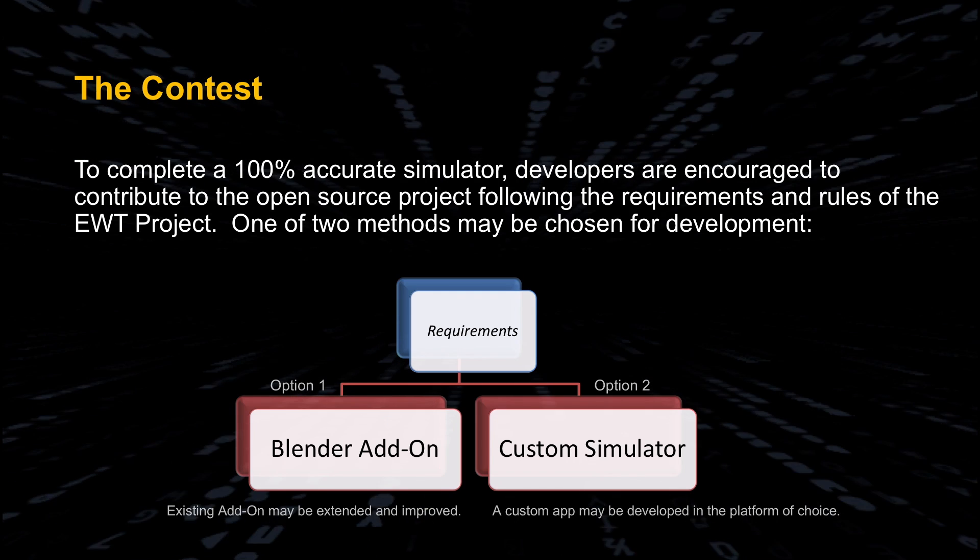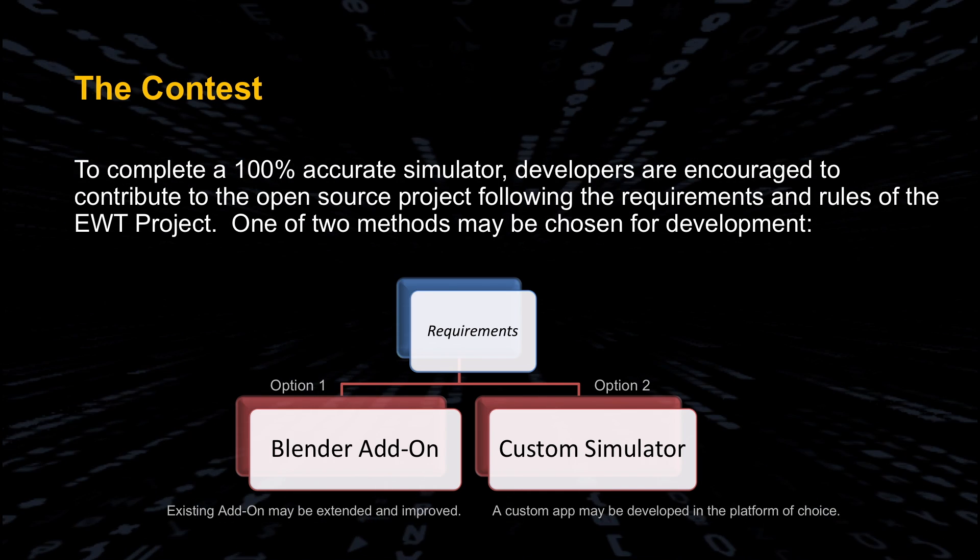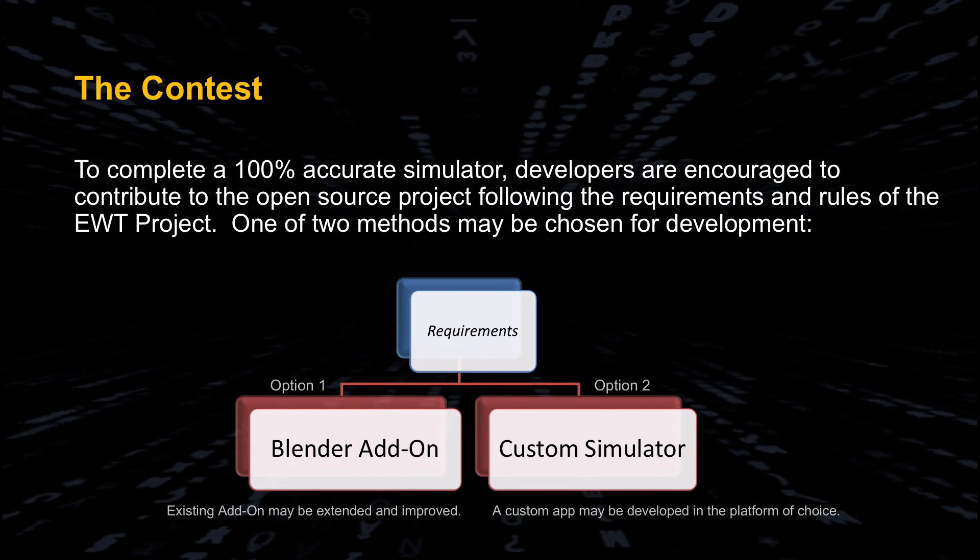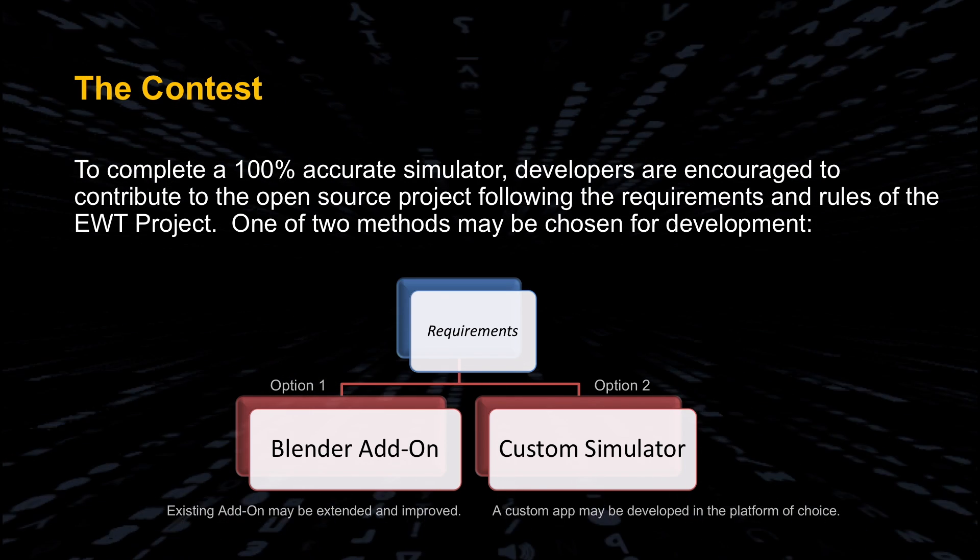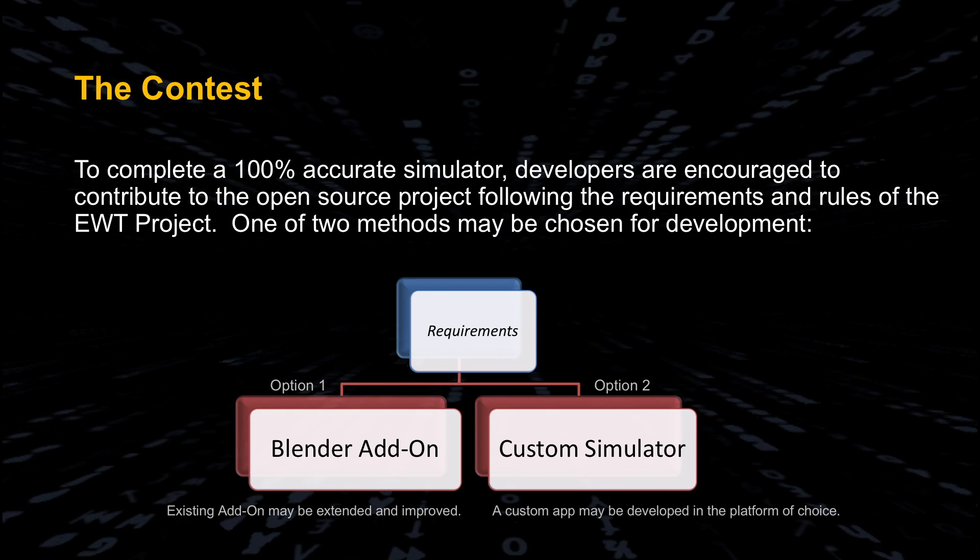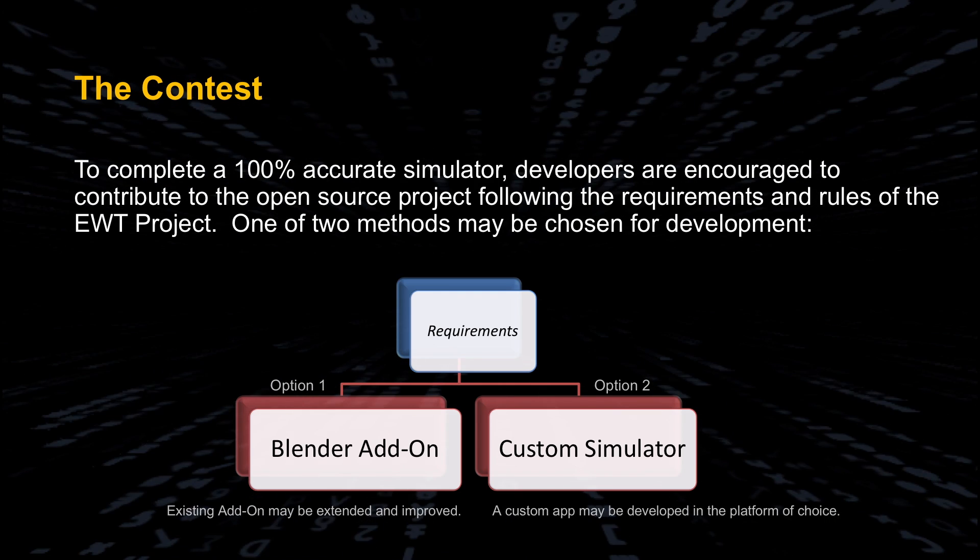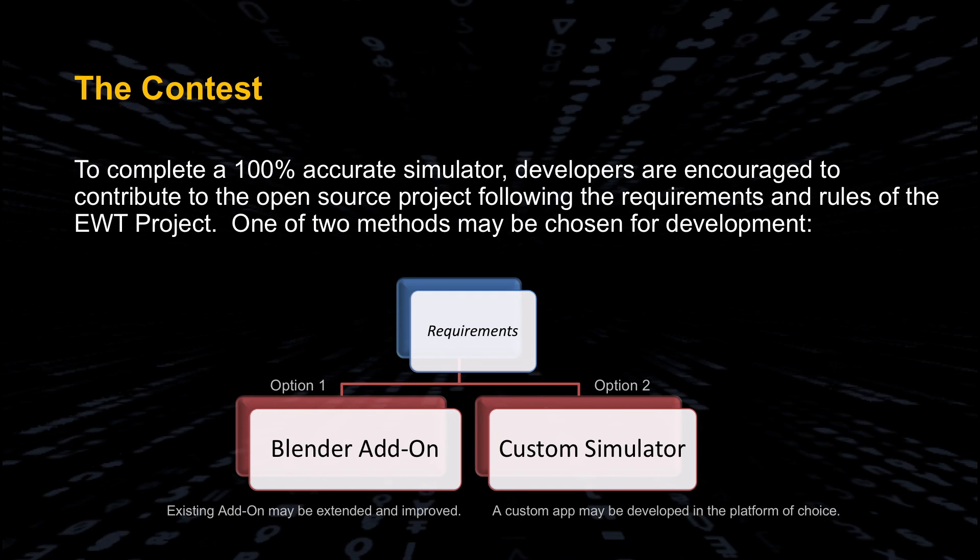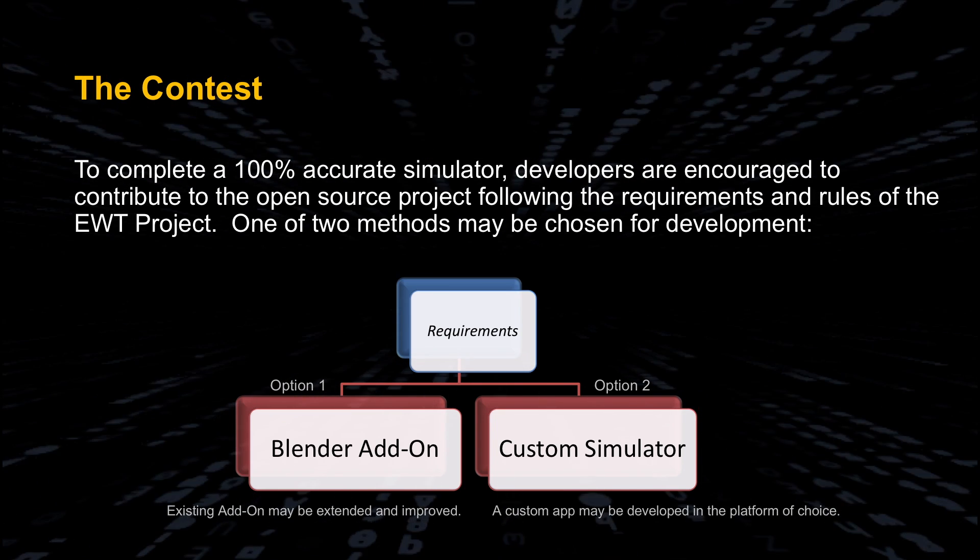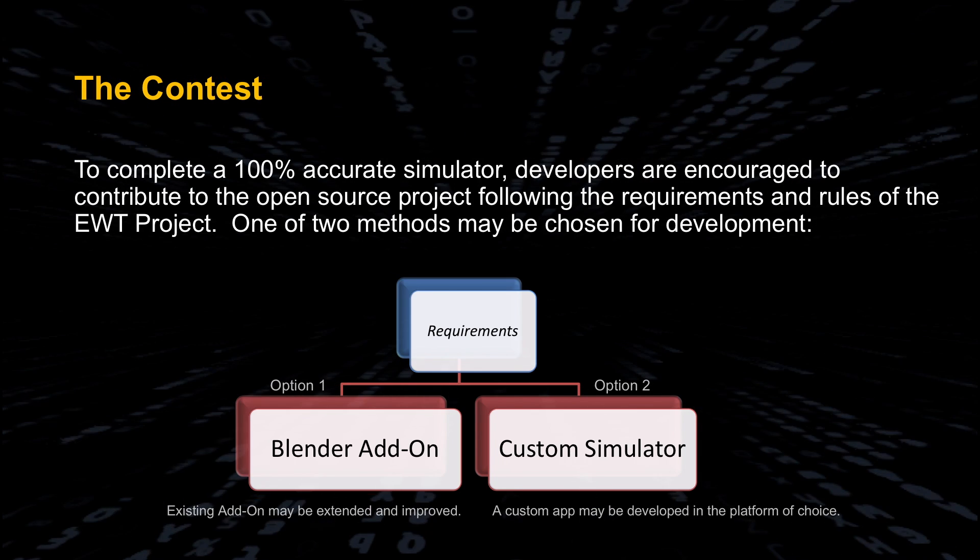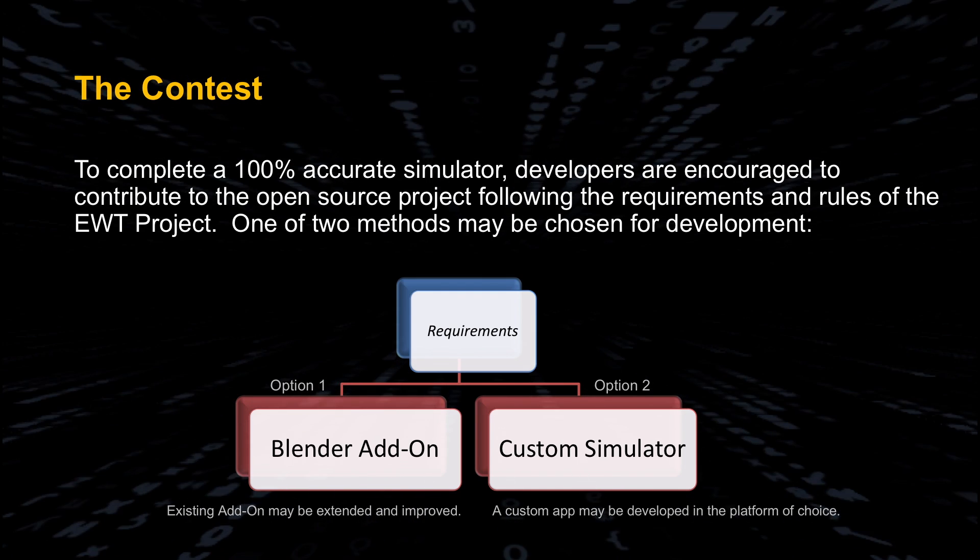And that brings us to the contest. To complete a 100% accurate simulator. Now it may be possible to extend the existing simulator in Blender to achieve this goal, or a developer might find that it's easier to build a new simulator from scratch, in which he or she has more control over the engine that drives the physics. Whichever path is taken, the goal remains the same. To be able to have every interaction accomplished using classical physics. And so requirements have been written for a developer to follow using one of these two paths. And these requirements are organized by phase, matching the same modules that you saw in the quantum microscope earlier.